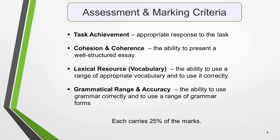As with all parts of the IELTS exam, Task 1 is marked according to four criteria. These are task achievement, which is appropriate response to the task; cohesion and coherence, the ability to present a well-structured essay; lexical resource or vocabulary, which is the ability to use a range of appropriate vocabulary and to use it correctly; and grammatical range and accuracy, the ability to use grammar correctly and to use a range of grammar forms. Each carries 25% of the marks. I've created separate lessons on vocabulary and grammar for Task 1, so in this video we'll look in detail at just the marking criteria for task achievement and coherence and cohesion.